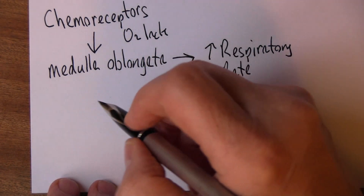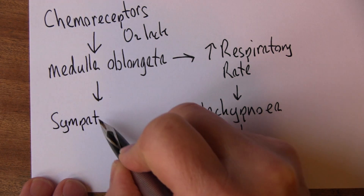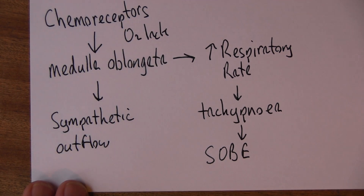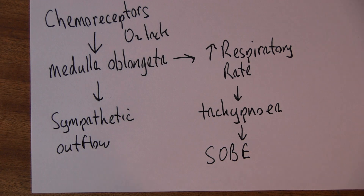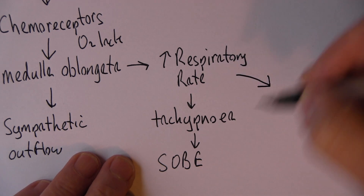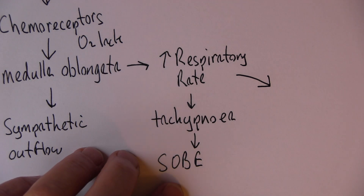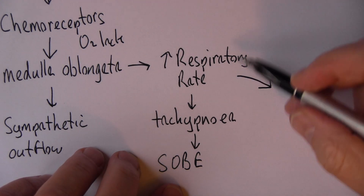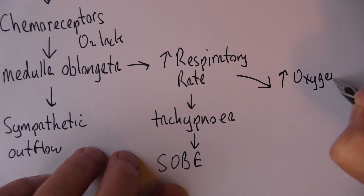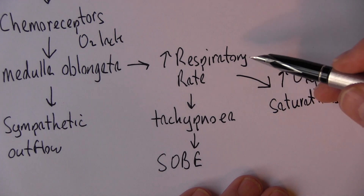As well as increasing respiratory rate, the medulla oblongata, when it detects oxygen lack, is going to increase overall sympathetic outflow — there's going to be an increase in sympathetic activity. Let's carry on with the increase in respiratory rate first. If there's an increase in the respiratory rate — that is tachypnea, the patient is breathing faster — especially shortness of breath on exertion, the effect of that is that breathing faster is going to increase oxygen saturations.